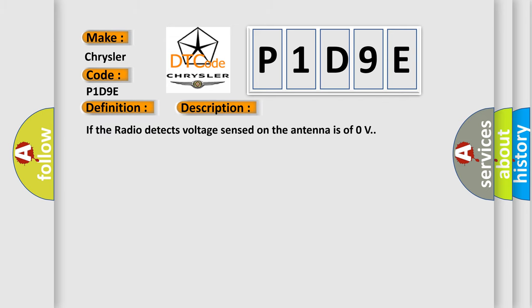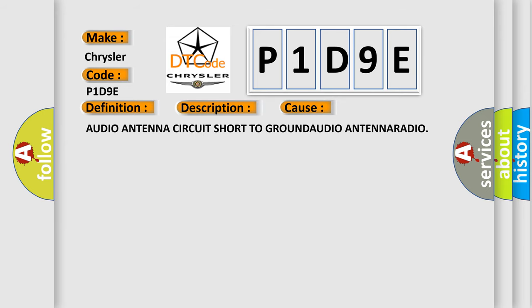If the radio detects voltage sensed on the antenna is zero volts. This diagnostic error occurs most often in these cases: Audio antenna, circuit short to ground, audio antenna radio.